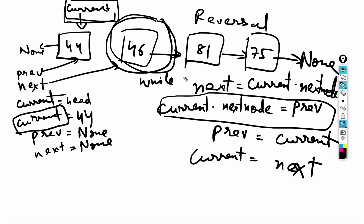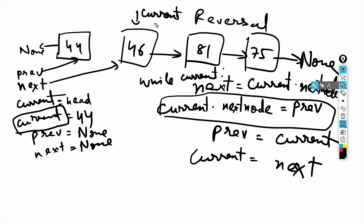The while loop condition is: while current. This is because current moves across the nodes, and when it reaches None, the list ends. So we use while current. Now current has moved to 46, previous has moved to 44, and since current is not None, the loop continues.